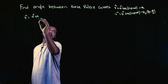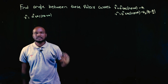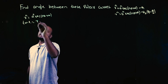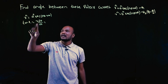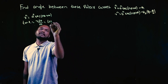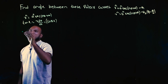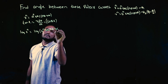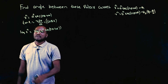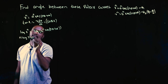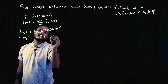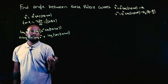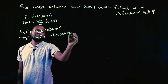The first curve is r^n = a^n · sec(nθ + α). To find φ₁ we need tan φ₁, which equals r · dθ/dr. Since we can't differentiate r directly, we take log on both sides: log(r^n) = log(a^n · sec(nθ + α)), giving n·log(r) = log(a^n) + log(sec(nθ + α)). The log(a^n) term will become 0 when we differentiate with respect to θ.